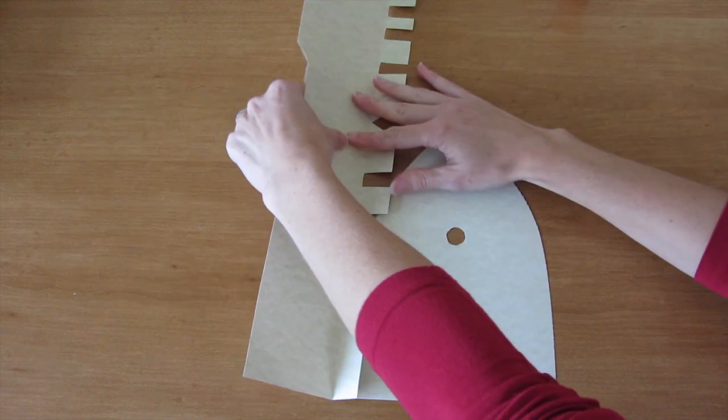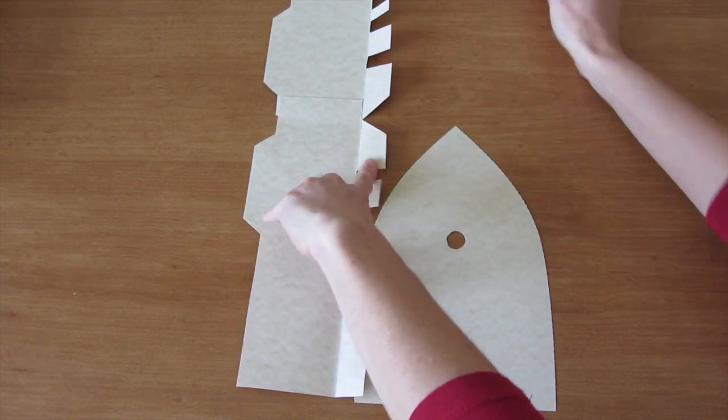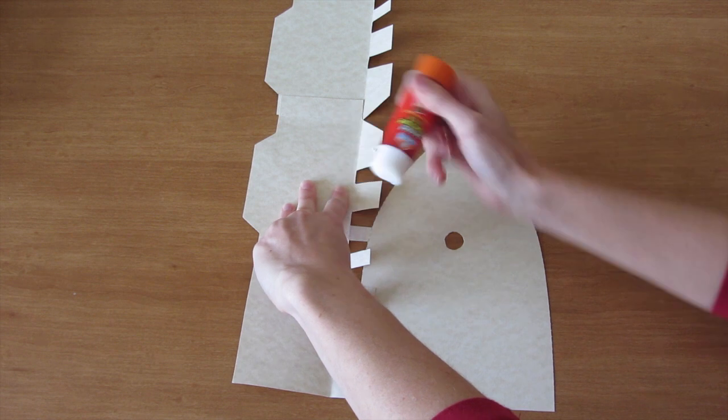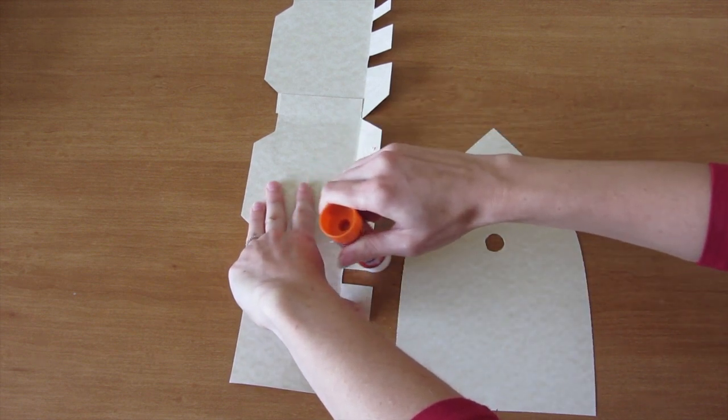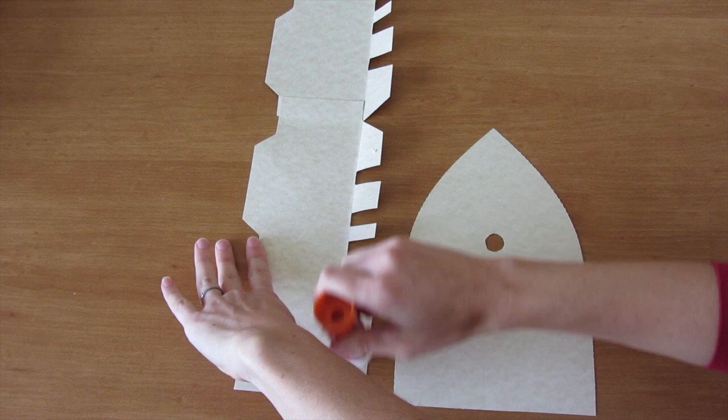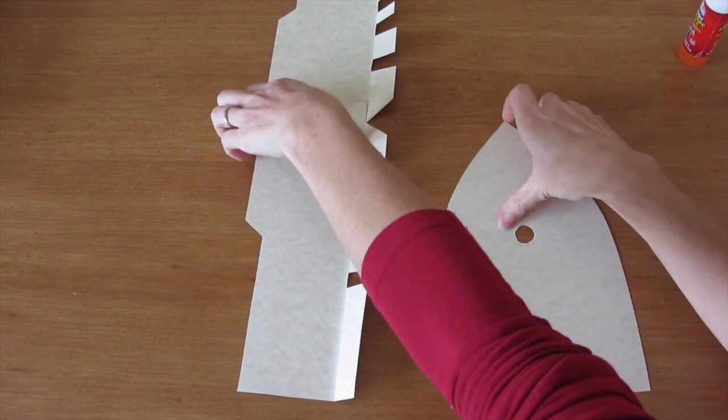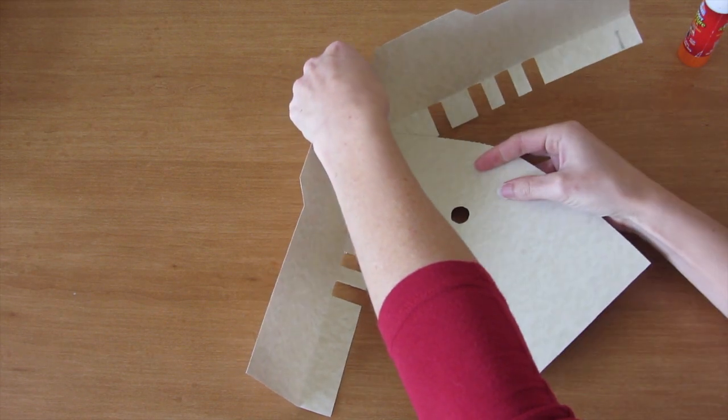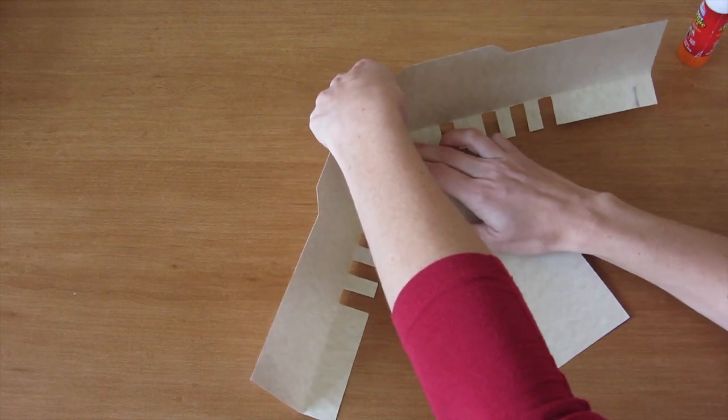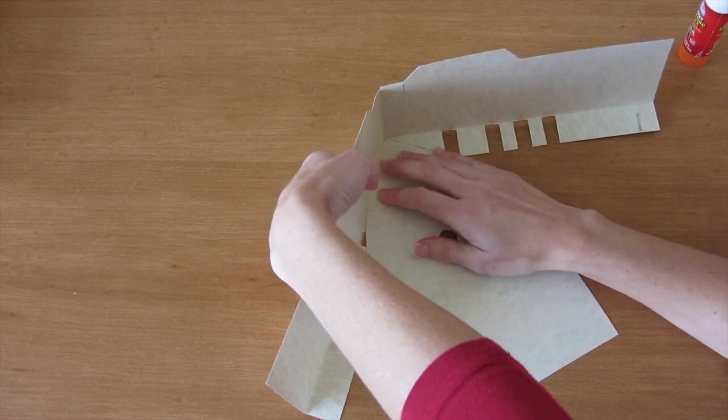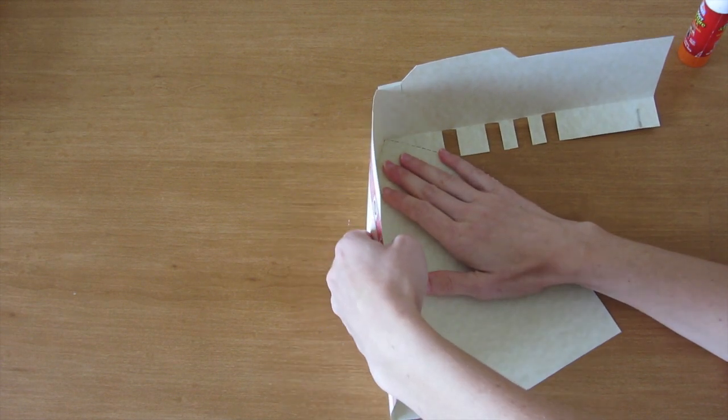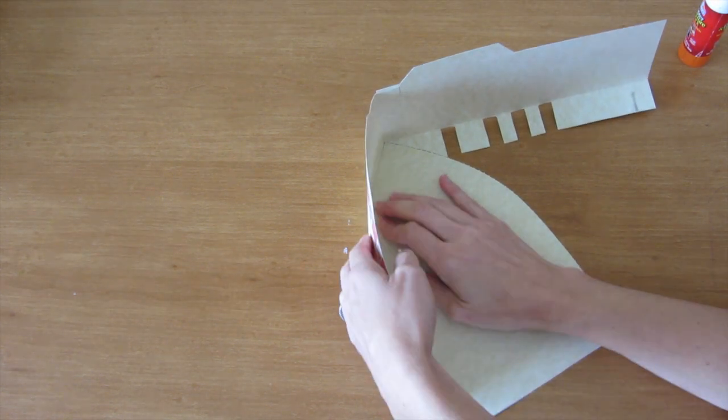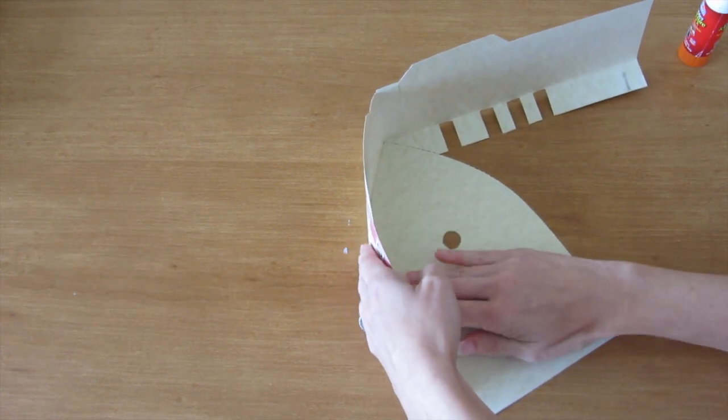Then turn it over and put a good amount of glue on each of the tabs of your port side. Put it onto your base. You're going to line it up with the point. And then just start pushing these pieces underneath like that. Press them down real good.